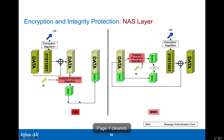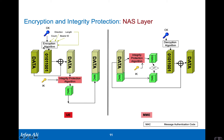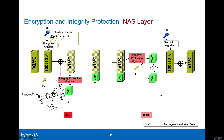There are a few more details to cover. It's not just the ciphering key used for encryption — there is also a 32-bit COUNT. This COUNT equals the NAS sequence number, which is 8 bits, plus a 16-bit overflow counter that increments every time the sequence number wraps beyond 256, plus an 8-bit padding field. So 8 + 16 + 8 = 32 bits. Both the UE and the MME keep track of this 16-bit overflow count.